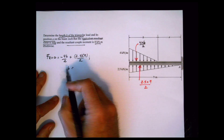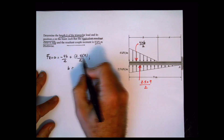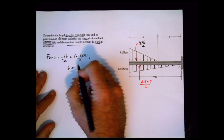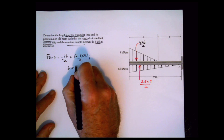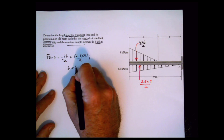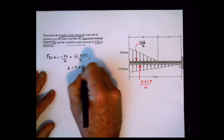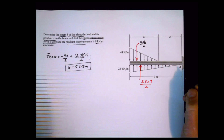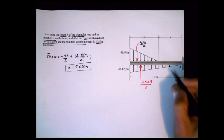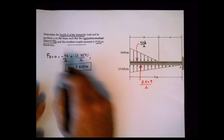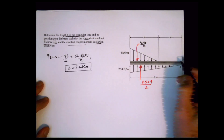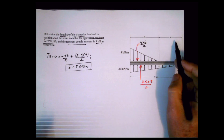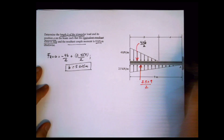These two cancel out, and it's going to be 2.5 times 9 divided by 4, and the result will be 5.625 meters. The length of the triangular load is done. Now for finding the location — distance a — we have another constraint.